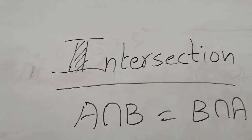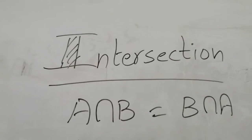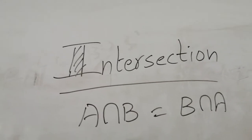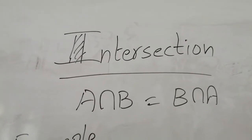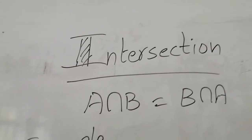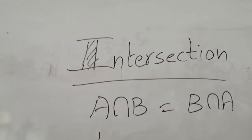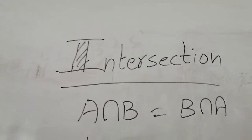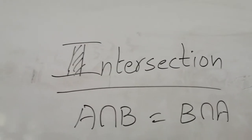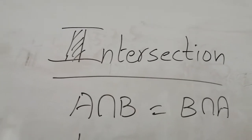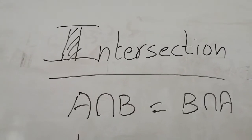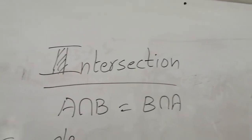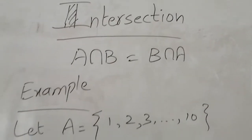Now we discuss the commutative law with respect to intersection. Commutative law for intersection states that A intersection B equals B intersection A. Whether you take A intersection B or B intersection A, it doesn't matter — the answer is the same.